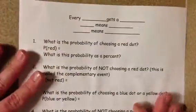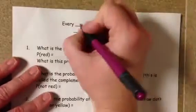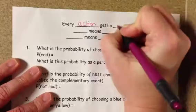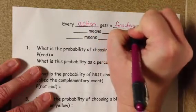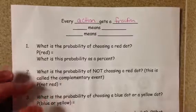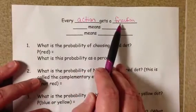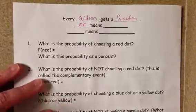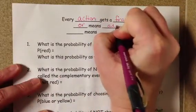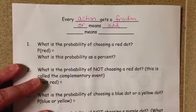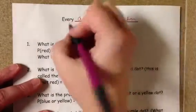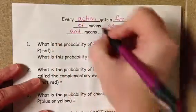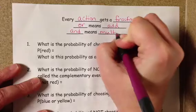We have everything filled in and now we're going to answer some questions. Every action gets a fraction — we need to memorize this. For each event that happens, we're going to set up a fraction. If the problem says the word 'or' — like flipping heads or tails — that tells us we need to add. If it says heads and then tails, that means our operation is going to be to multiply.